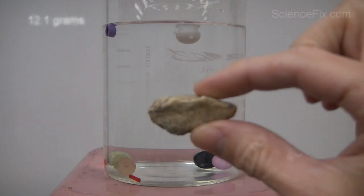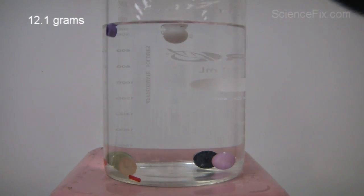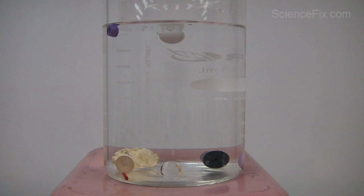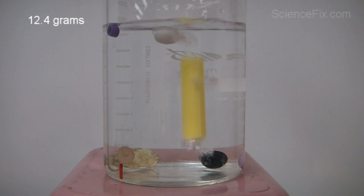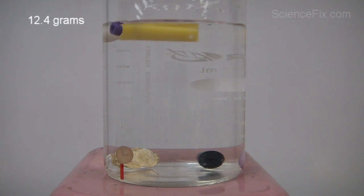The rock has a mass of 12.1 grams, and it sinks quickly to the bottom. The yellow block has a mass of 12.4 grams, and it floats when placed into the water.